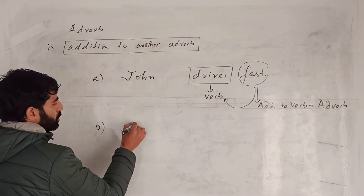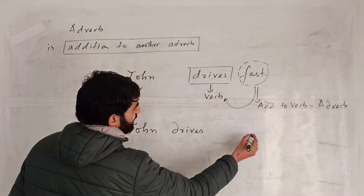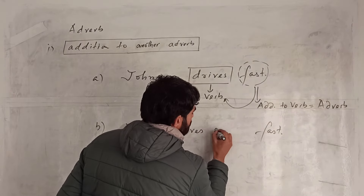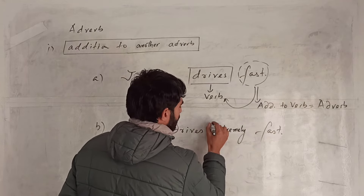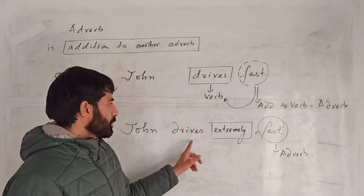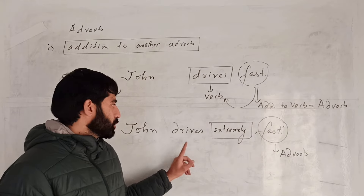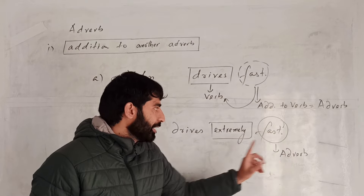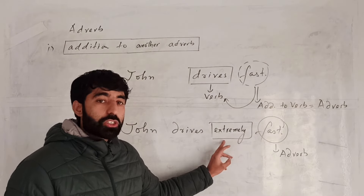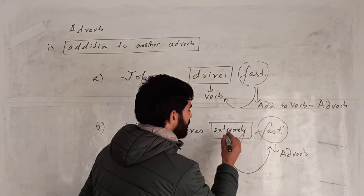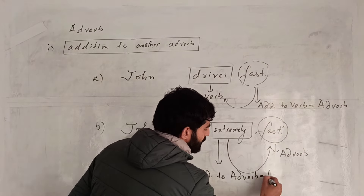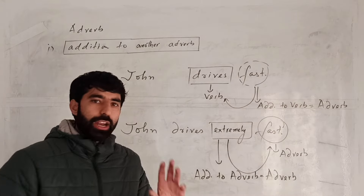Now if I add one more word: 'John drives extremely fast.' Fast is already an adverb — addition to verb drives. The word extremely is an addition to fast, which is an adverb. So, extremely is an addition to an adverb, and that means it is also an adverb. Addition to adverb is also an adverb.